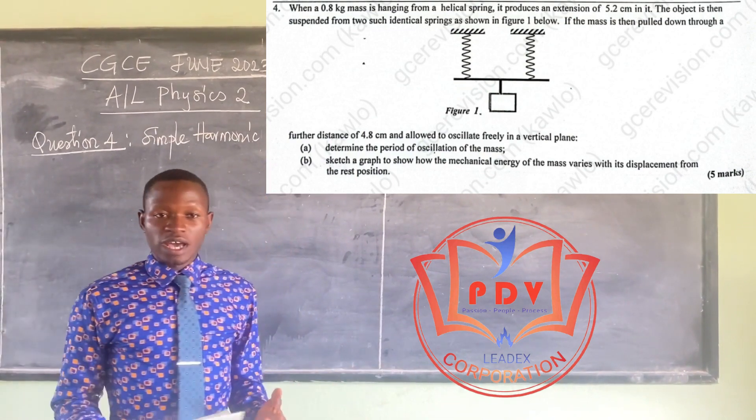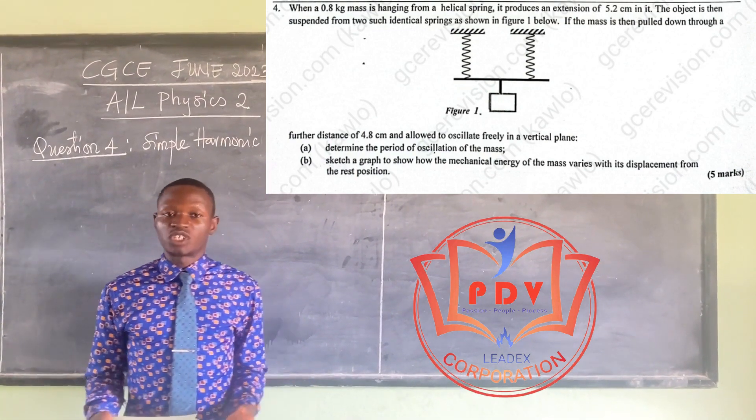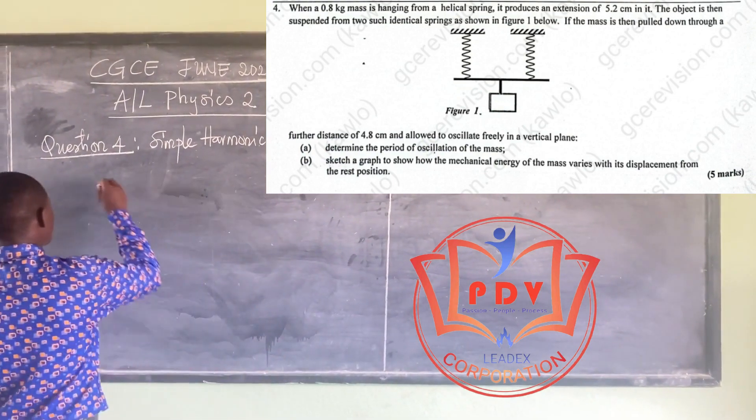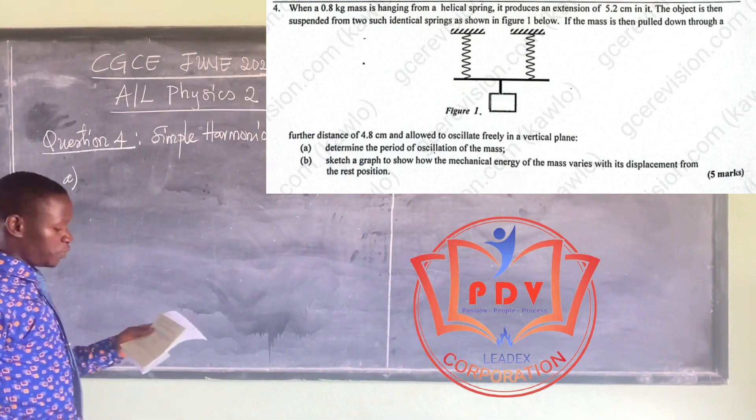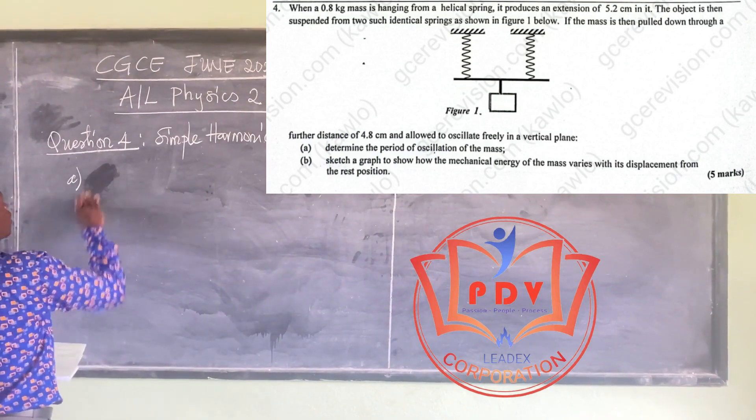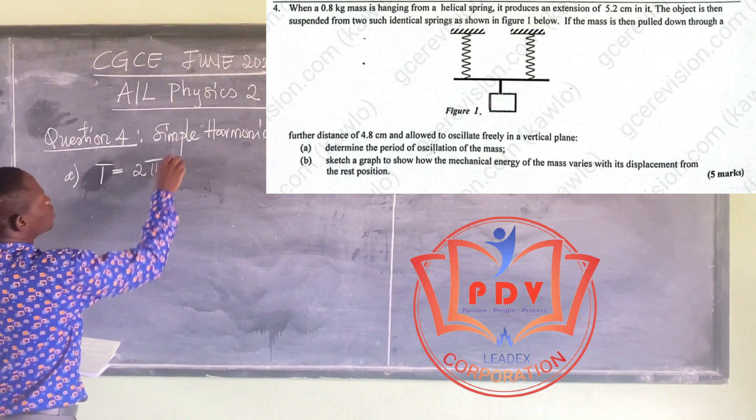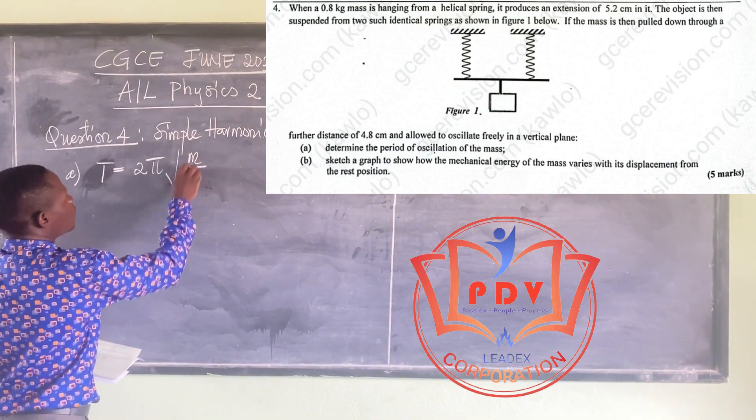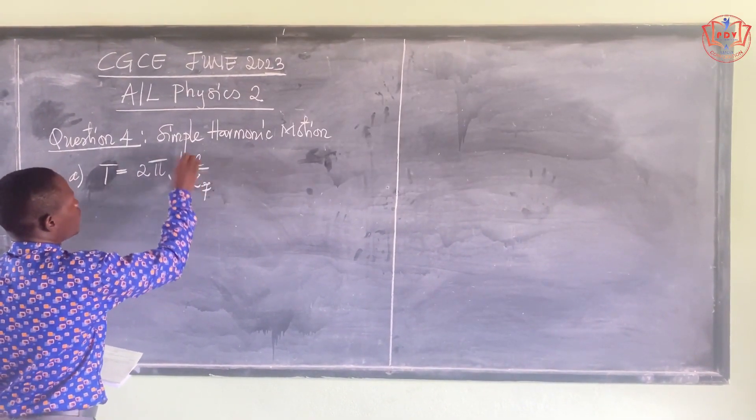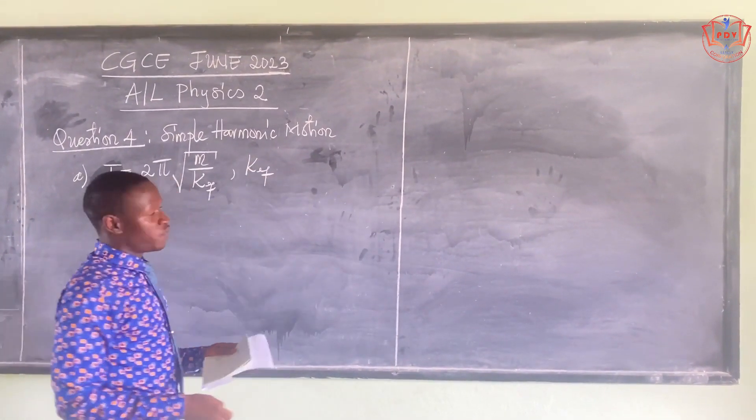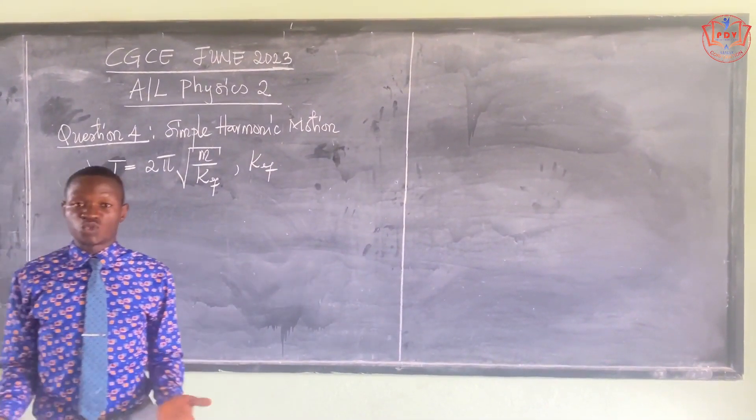So here we have a simple harmonic motion situation which involves a helical spring. The first part of the question says we should find the period of the mass. We know that the period of oscillation is given as T = 2π√(m/k_eq), where k_eq here is the equivalent spring constant of the two springs.